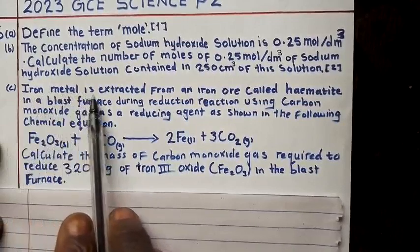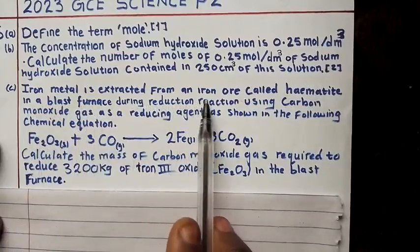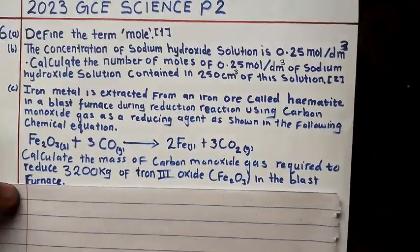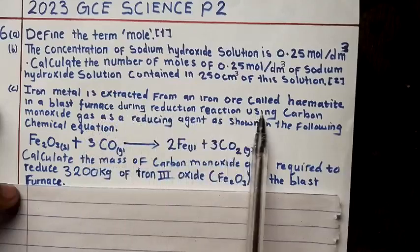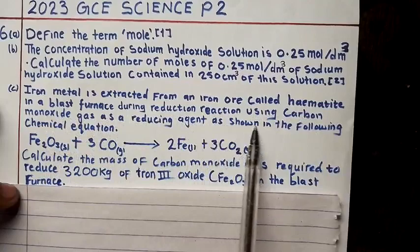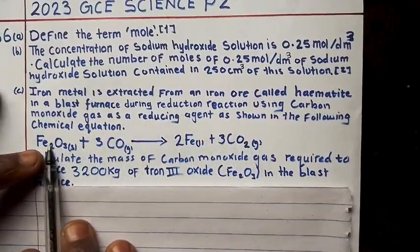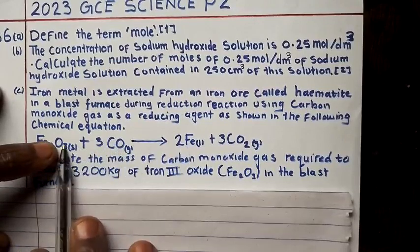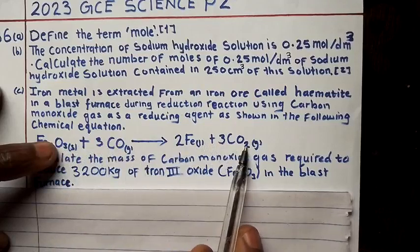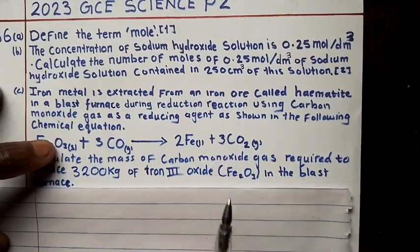Question C says: iron metal is extracted from an iron ore called haematite in a blast furnace. During a reduction reaction using carbon monoxide gas as a reducing agent, as shown in the following chemical equation. The equation is balanced — there are two atoms of iron on each side, six atoms of oxygen on each side, and three atoms of carbon on each side.